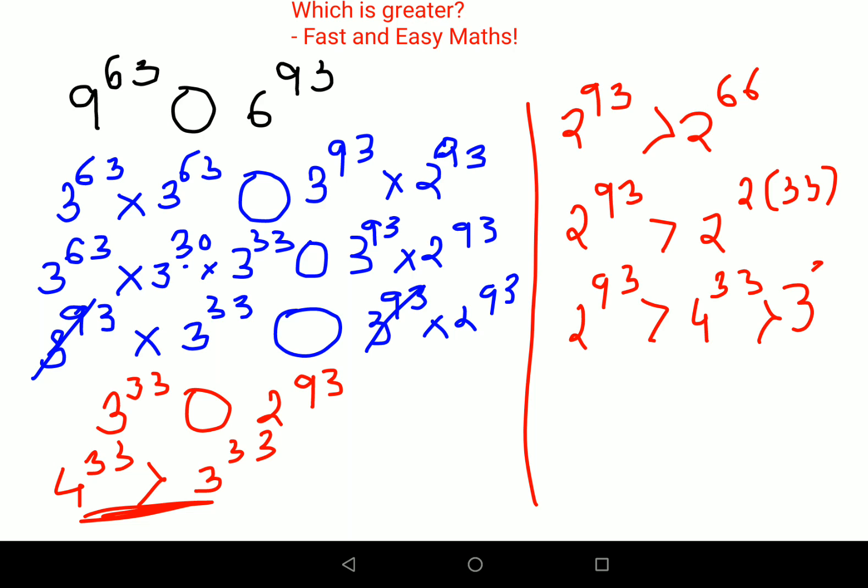So I can say that out of these two values, the one which has 2 raised to 93 is greater. Therefore, 9 raised to 63 is less than 6 raised to 93. Do like, share, and subscribe for many such videos.